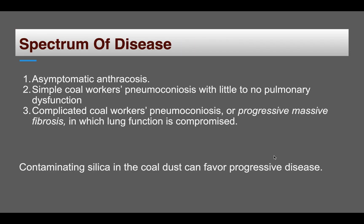The spectrum of disease in coal worker's pneumoconiosis includes three stages. First is asymptomatic anthracosis, where the person is mostly asymptomatic. Second is simple coal worker's pneumoconiosis, with little or no pulmonary dysfunction. Third is complicated coal worker's pneumoconiosis, also known as progressive massive fibrosis, where lung function is compromised.